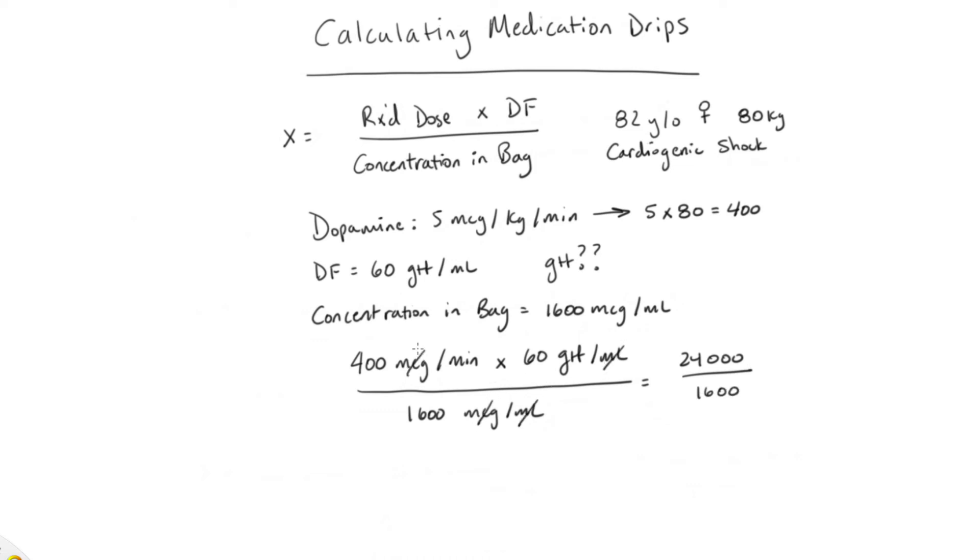We cancel out all of our units. And we see that we're left with the units of drops per minute, GTT per minute. So when we do this, we see that our division of 1,600 into 24,000 equals 15 drops per minute.